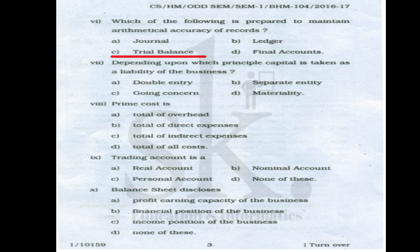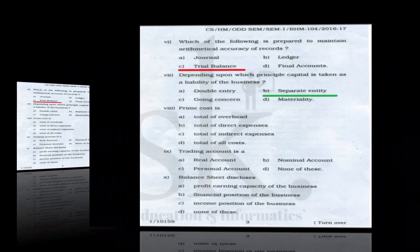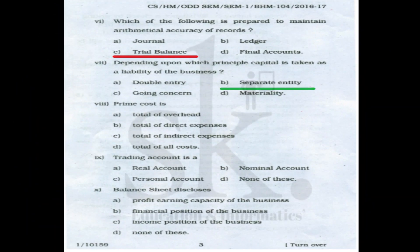Question number seven: depending upon which principle is capital taken as a liability — it is the separate entity concept, where the proprietor and the business are two separate entities, and money contributed by the proprietor is capital, which is a liability to the business. The correct option is B.